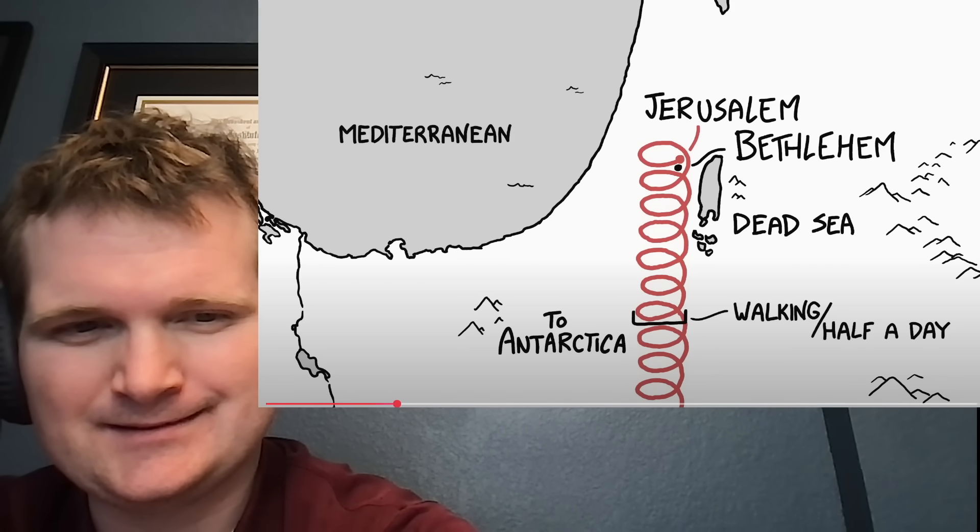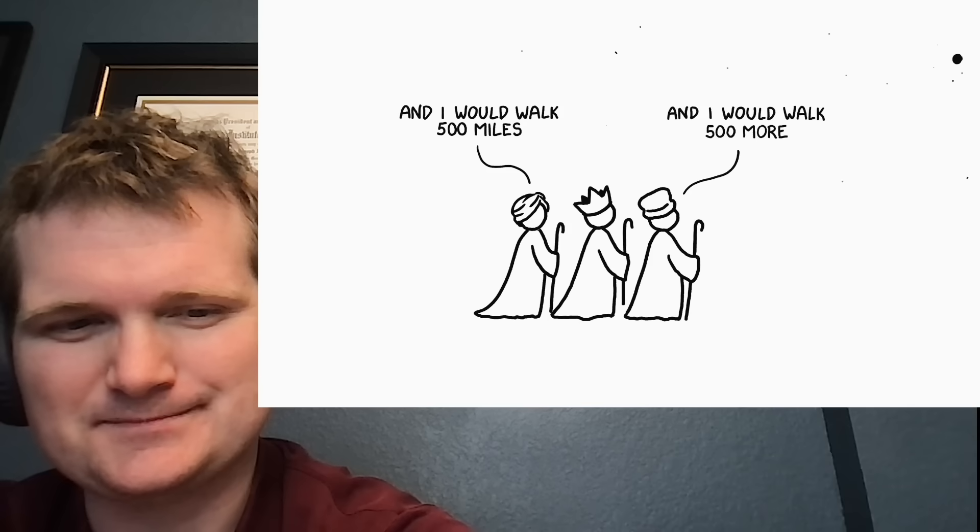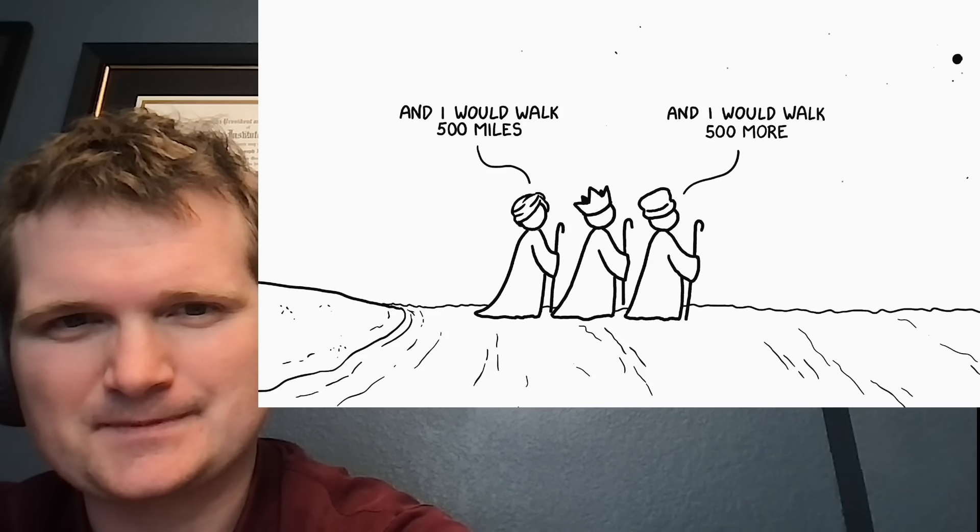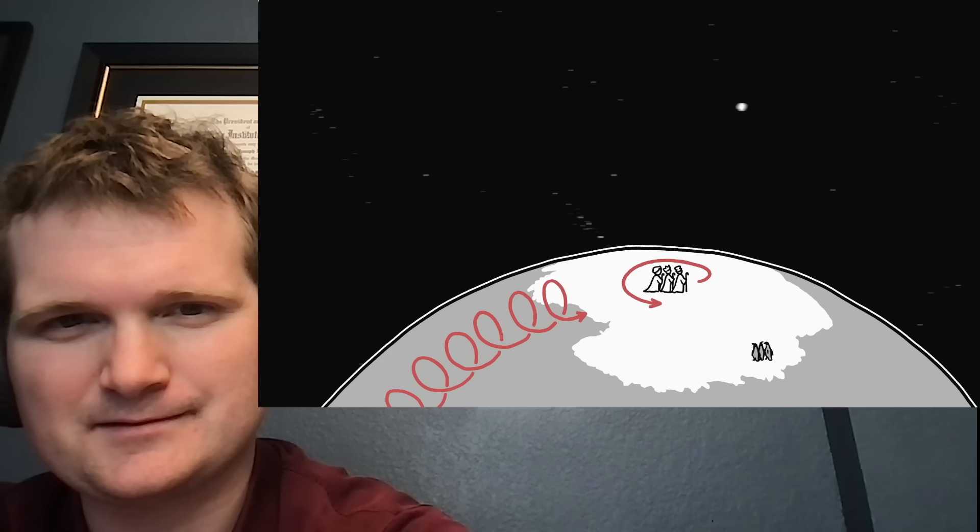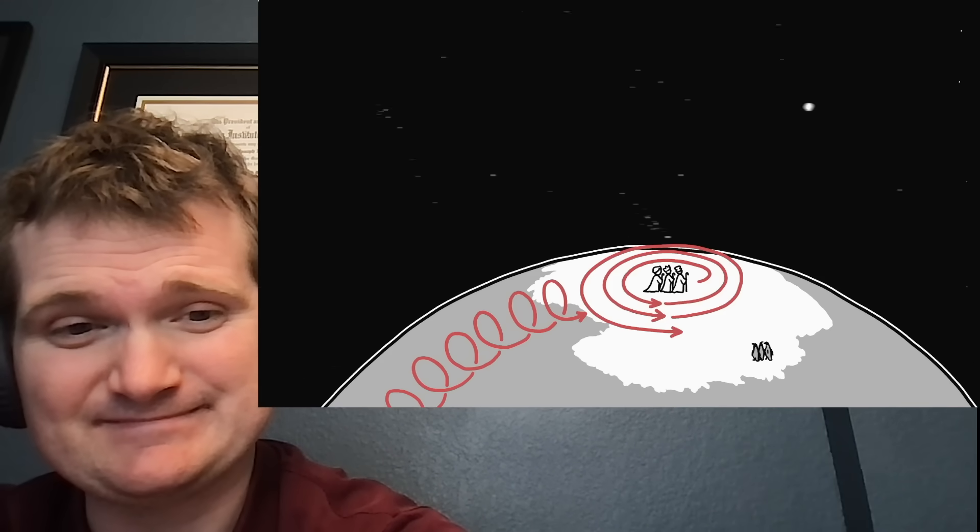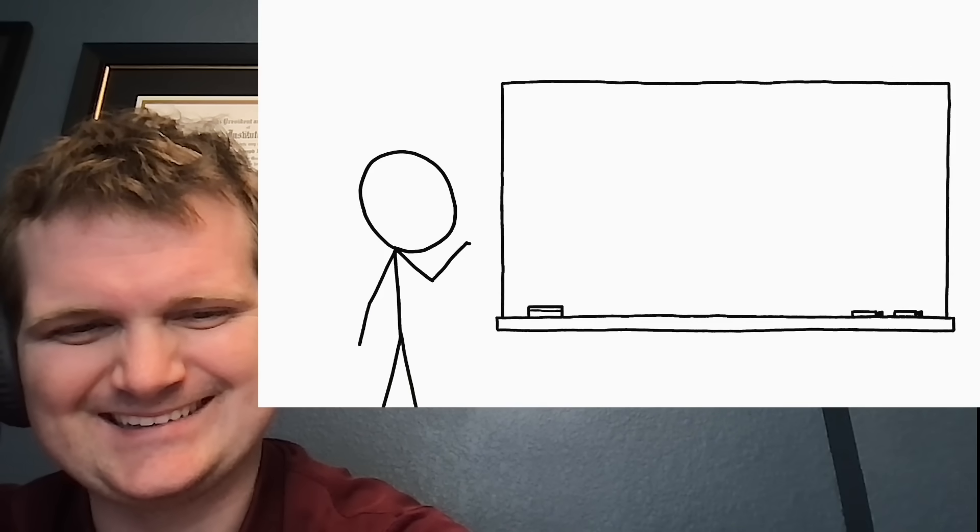The spiral is determined by how far a person can walk in half a day. If we allow a little theological confusion and assume that the wise men can walk on water, they'll eventually wind up going in an endless circle 30 kilometers in diameter around the South Pole.